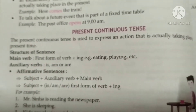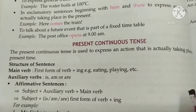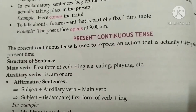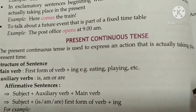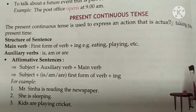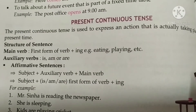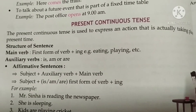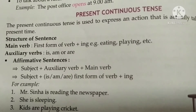Now, present continuous tense. 'Continuous' means we are doing work continuously. The present continuous tense is used to express an action that is actually taking place at the present time. The structure: main verb first form + ing — like eating, playing, etc. The auxiliary verbs used are: is, am, are. Affirmative sentence structure: Subject + auxiliary verb (is/am/are) + main verb + ing.